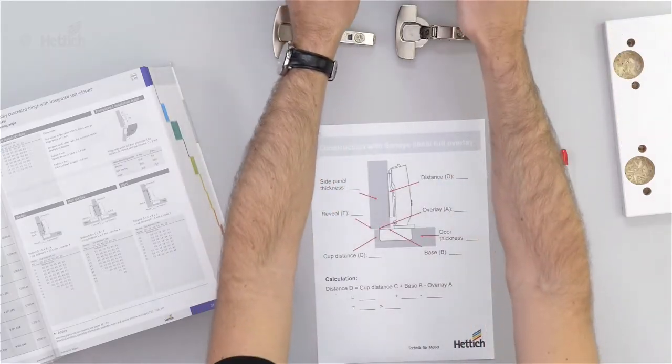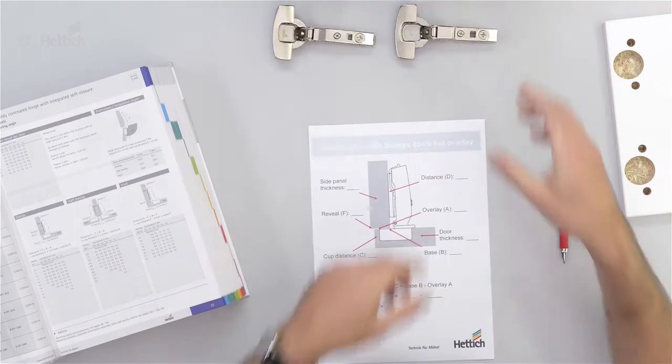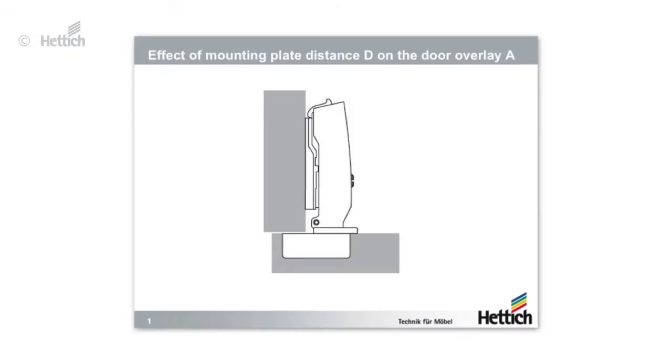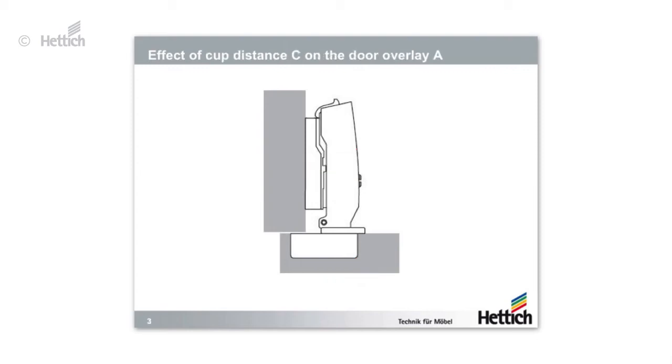By changing the distance D, we are also changing the overlay of the door and the same applies if we are changing the cup distance C.